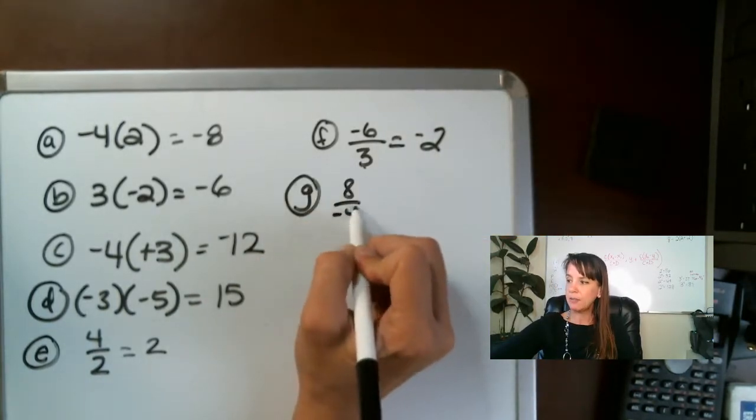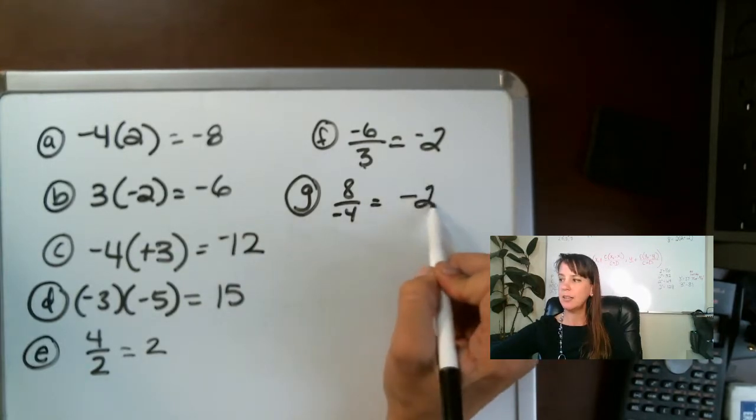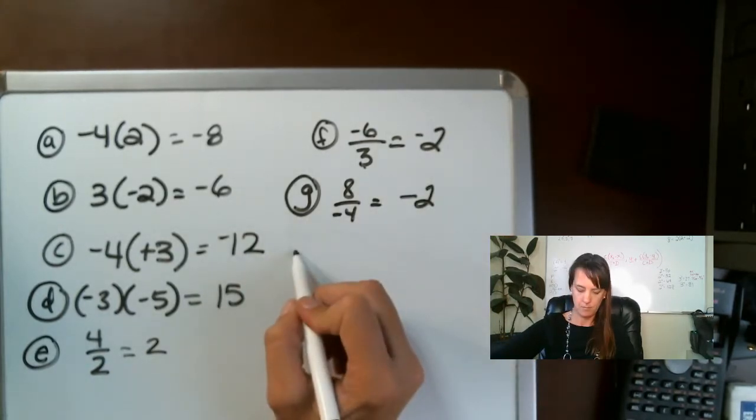G is eight and negative four. Those are different signs, so it's going to be negative two.